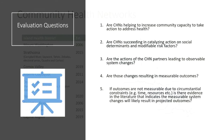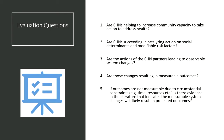We sought to answer five evaluation questions: Are CHNs helping to increase community capacity to take action to address health? Are they succeeding in catalyzing action on social determinants and modifiable risk factors? Are there actions leading to observable system changes? Are those changes resulting in measurable outcomes? And if outcomes are not measurable due to circumstantial constraints such as time or resources, is there evidence in the literature that indicates the measurable system changes will likely result in projected outcomes?